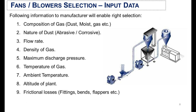Fourth is the density of the gas. Fifth is the maximum discharge pressure required at the downstream of the flow. Sixth is the temperature of the gas. Seventh is the ambient temperature at which the blower will be installed. Eighth is the altitude of the plant — the height at which the blower will be installed — and accordingly the suction and discharge piping network will be routed to that elevation. Ninth is the friction losses at the suction and discharge ducts in the form of fittings, bends, and flappers.